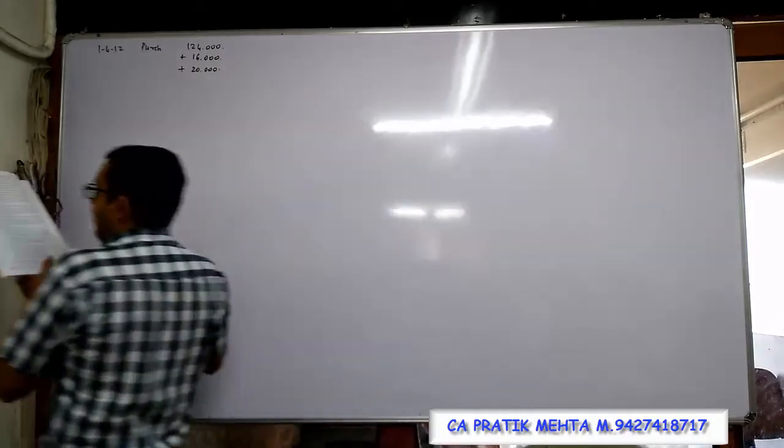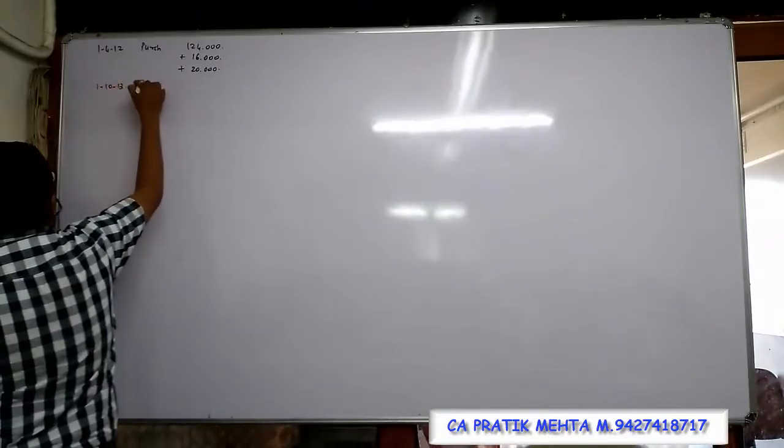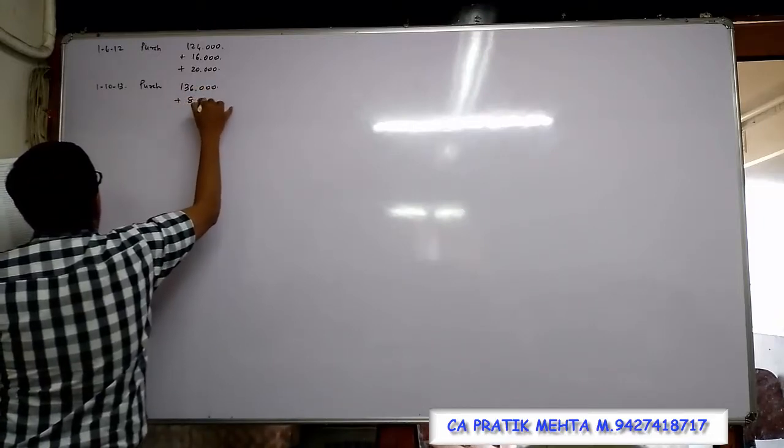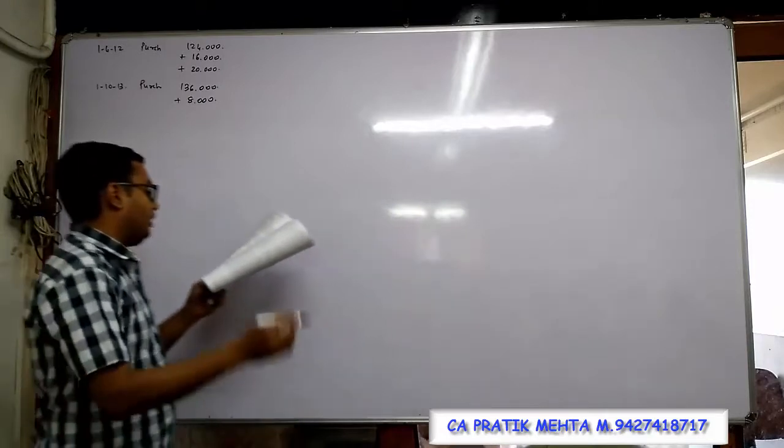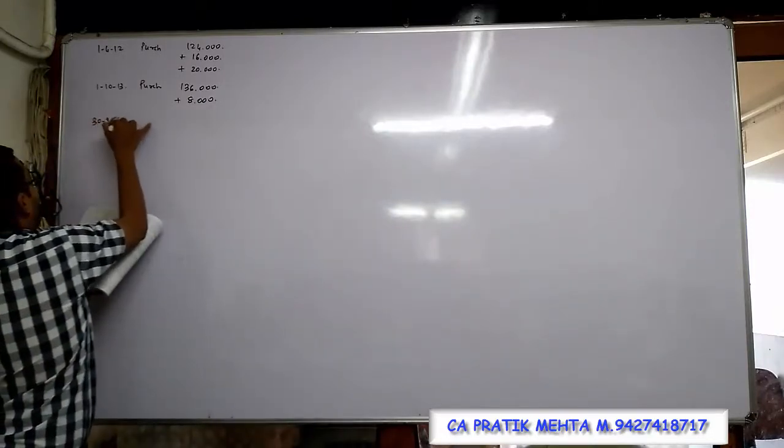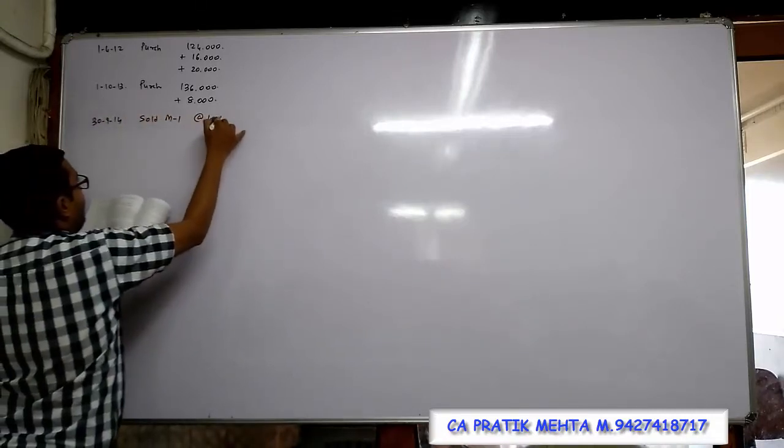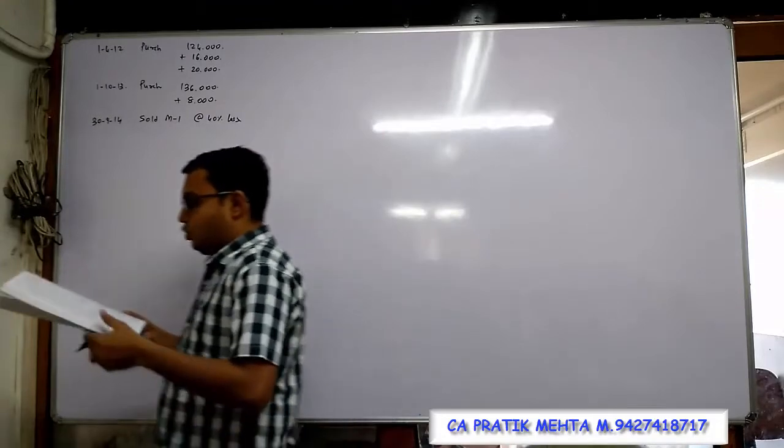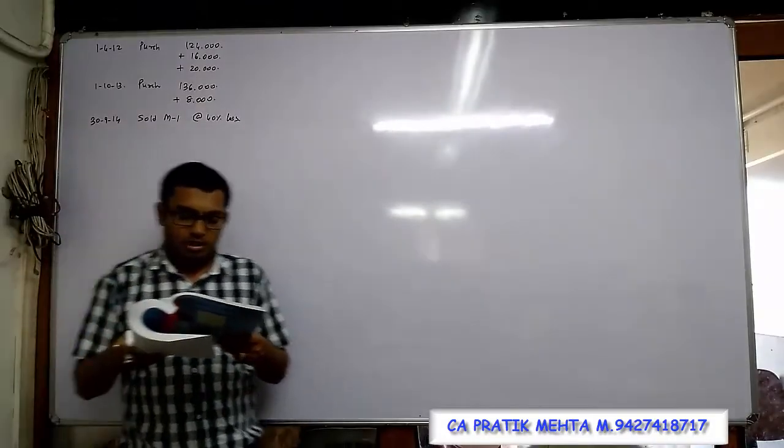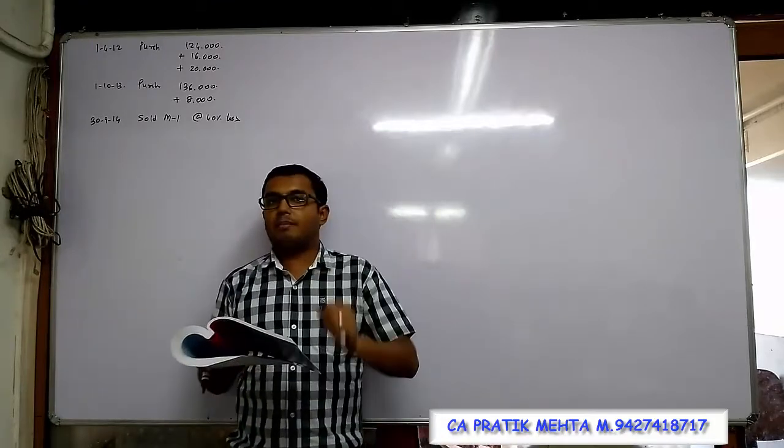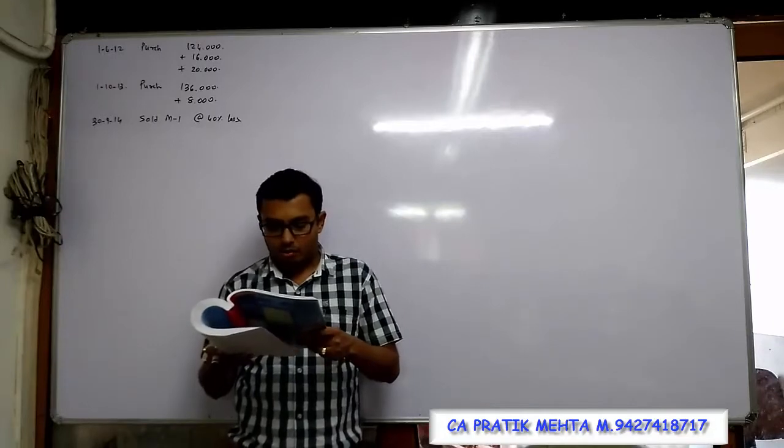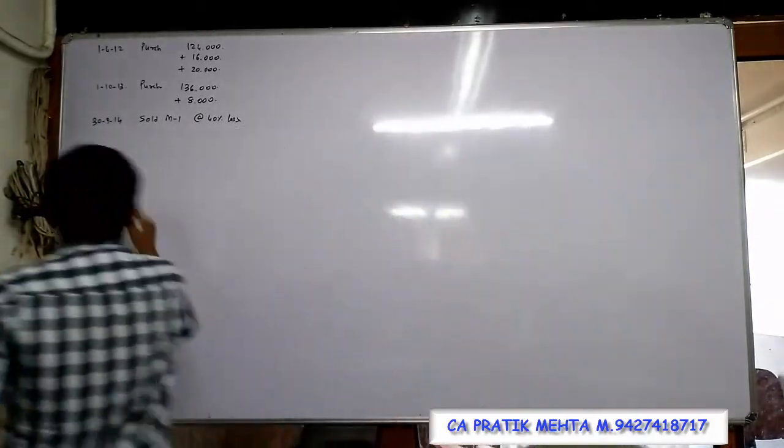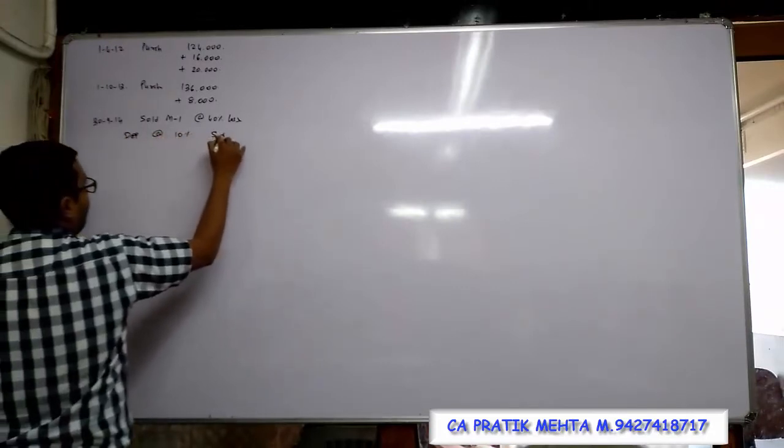On 1-10-2013 second machine was purchased. Please check, 1-10-2013 purchased one more machine for Rs. 36,000 with installation expense Rs. 18,000. First machine was sold on 30 September 2014 at 40% loss. Prepare machinery account up to 31st March 2015. Company provides depreciation on machinery at the rate of 10% every year on straight line method. Shall we write down depreciation at the rate of 10% SLM.